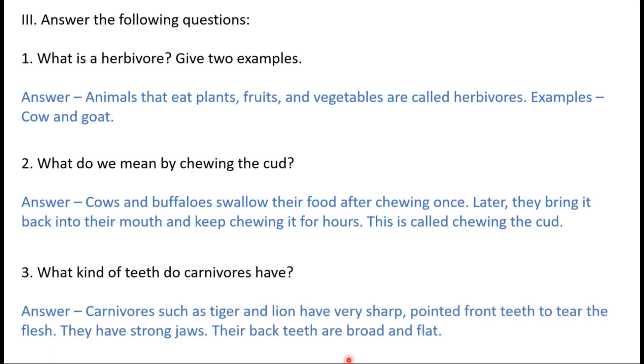Carnivores such as tiger and lion have very sharp pointed front teeth to tear the flesh. They have strong jaws. Their back teeth are broad and flat.